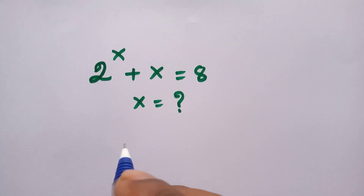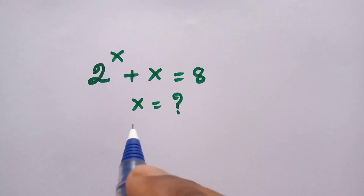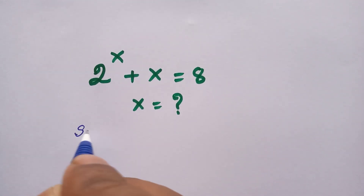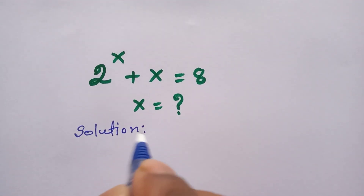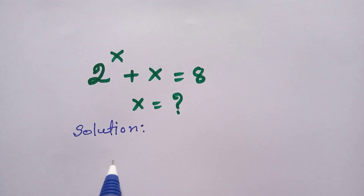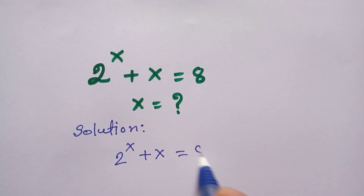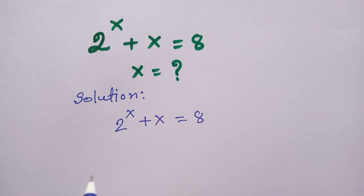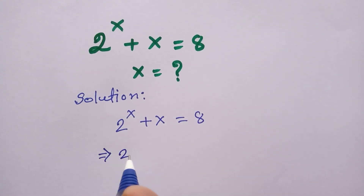Hi everyone, welcome to solve this Lambert W function question: how to find the value of x. Our question is 2 to the power 4x plus x is equal to 8.